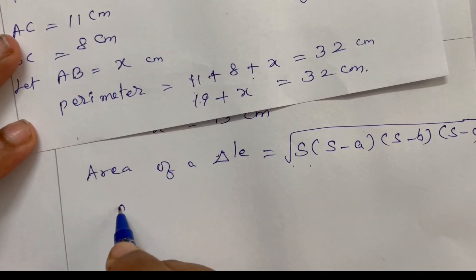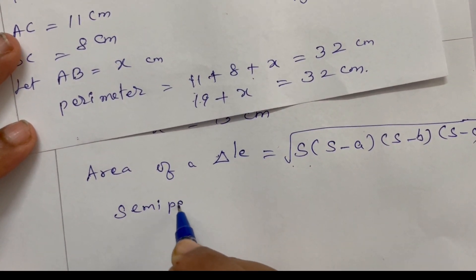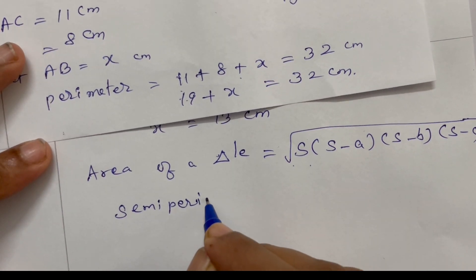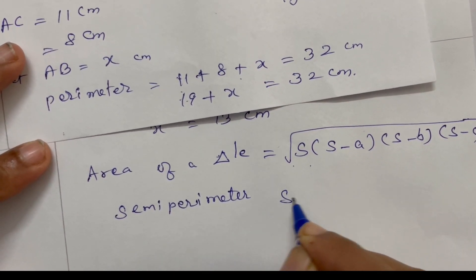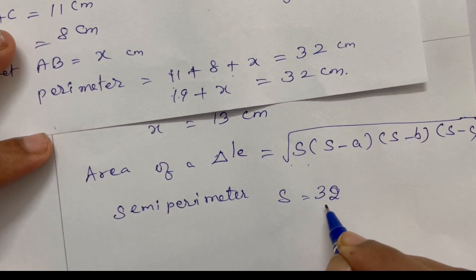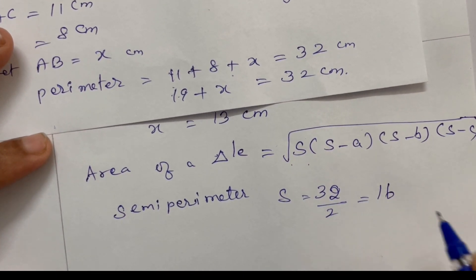Now semi-perimeter S is equal to 32 divided by 2 equal to 16.